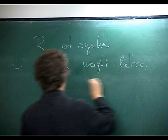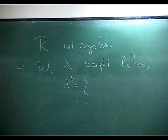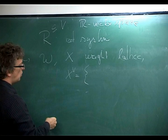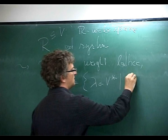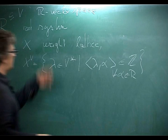What is the co-weight lattice? The root system sits inside a Euclidean real vector space. The co-weight lattice is defined as all elements in the dual of this space such that if you evaluate at a root you get something integral — so for all alpha in R. Into the weight lattice you do the same with the co-roots.